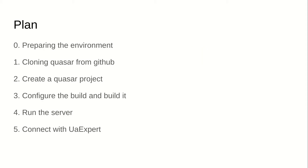In this part, we'll walk you from ground zero — that basically means you just heard about Quasar and have never used it — up to the point where you can get your first Quasar-based OPC UA server running, and that should take about five minutes. We'll show you where to find information and how to prepare your work environment, then how to clone Quasar, how to make a basic Quasar project, how to configure the build and build it, and then how to run the server and connect to it with UA Expert.